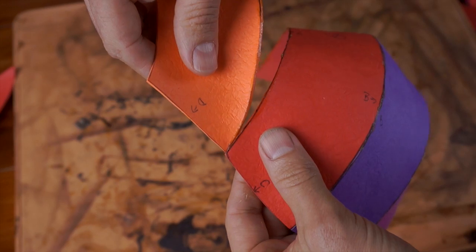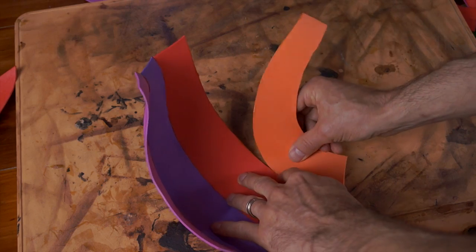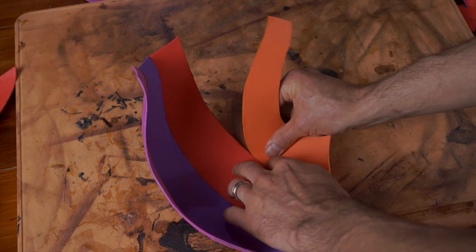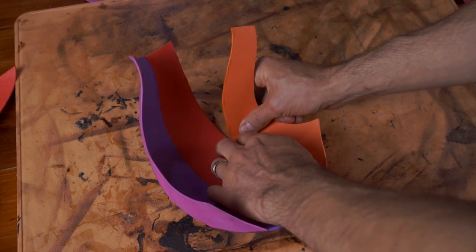Now repeat the process with piece number two on each side, always starting from the front and working your way back. Sometimes it's easier if it's laying on a flat surface while you push the two sides together.